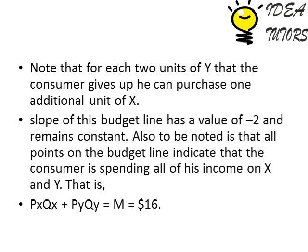Note that for each two units of Y that the consumer gives up, they can purchase one additional unit of X. They give up two units of Y and get only one unit of X, because one unit of Y costs $1, so two units of Y cost $2 — which is exactly what a single unit of X costs. The slope of the budget line has a value of minus two.